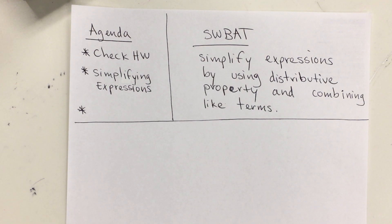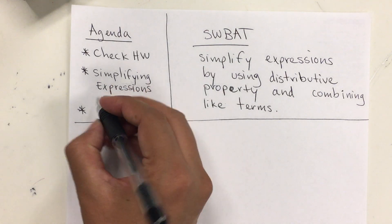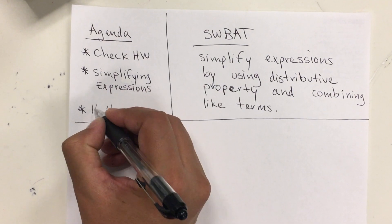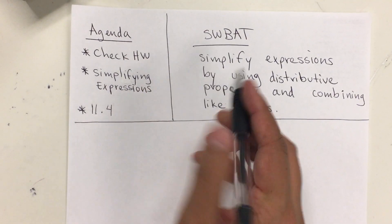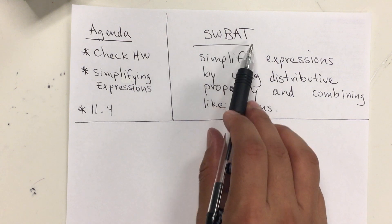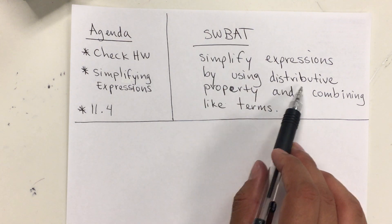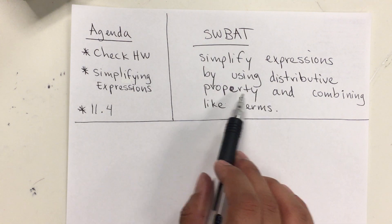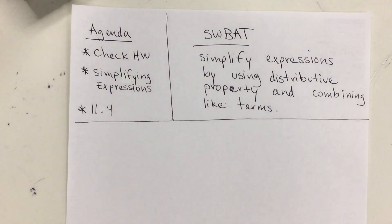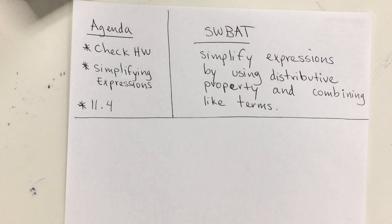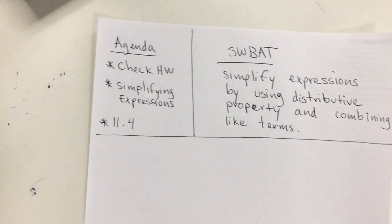Hello students. Today's agenda is to check homework. We'll be simplifying expressions and you will be able to do 11.4. Today students will be able to simplify expressions by using distributive property and combining like terms. But before we do that, let's do a small do now.